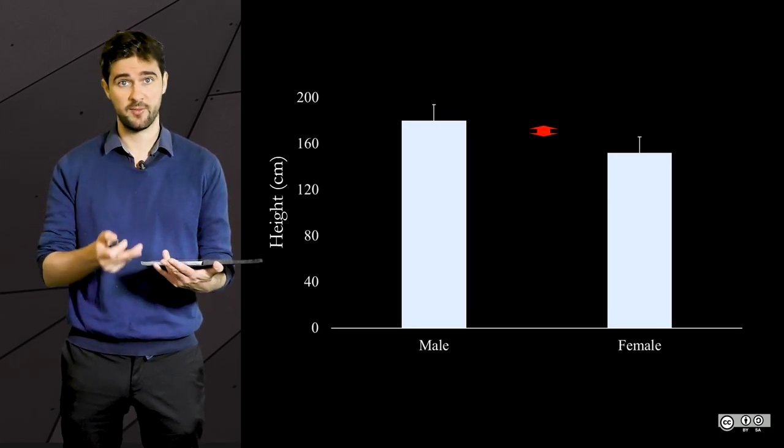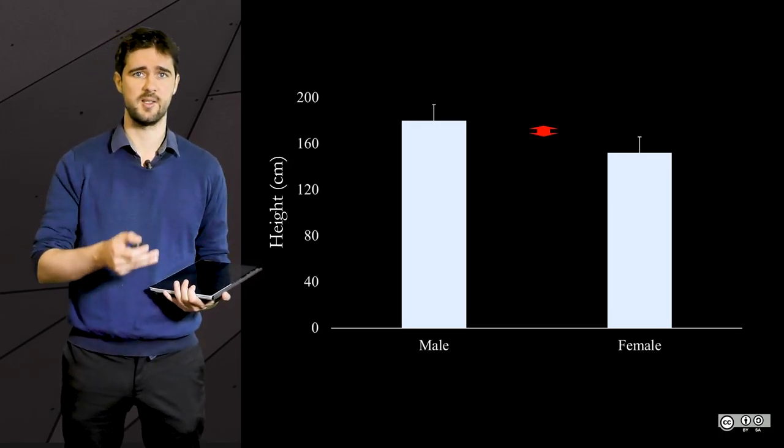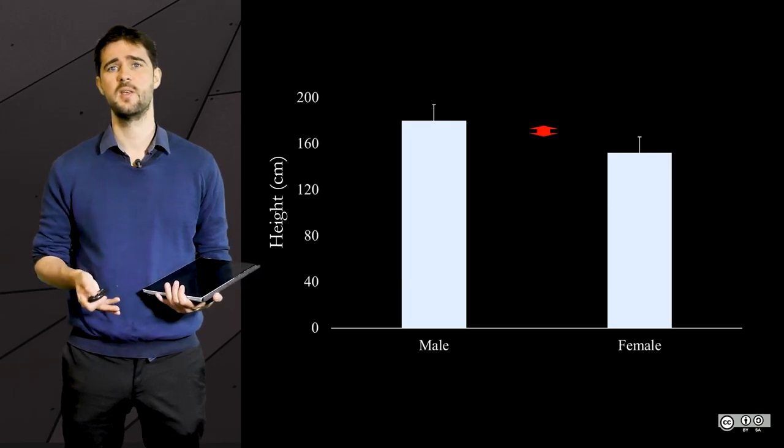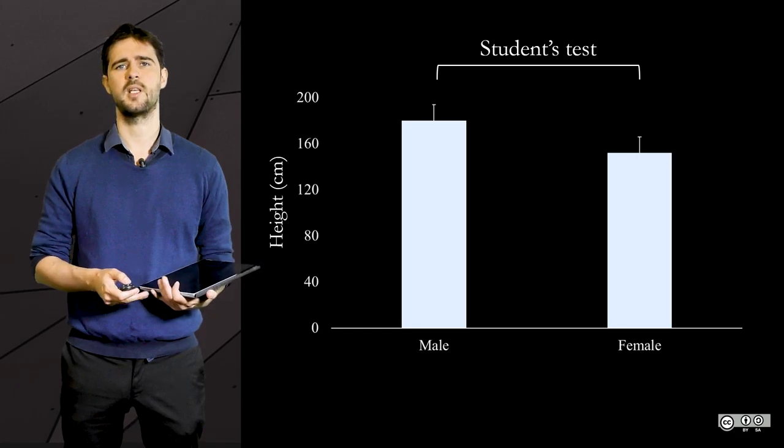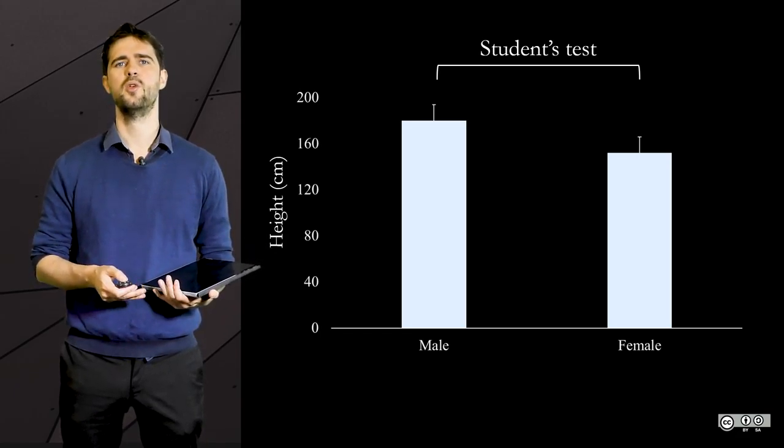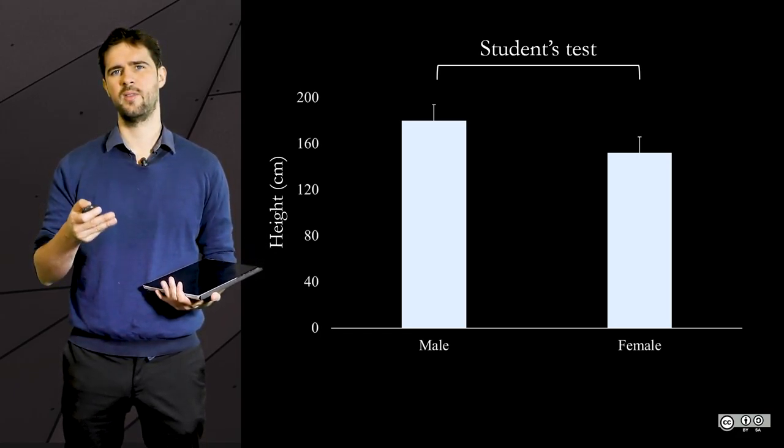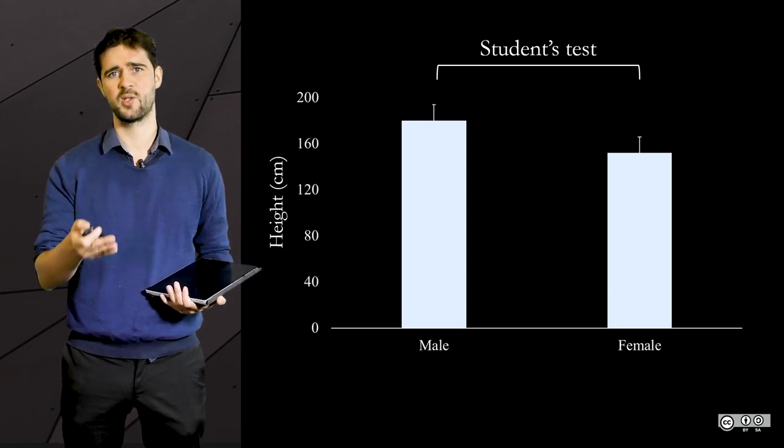If you are comparing the heights of two groups, for instance, like in this case of the height of boys and girls, then you are going to use what is called the student's test. It is a form of ANOVA, by the way.